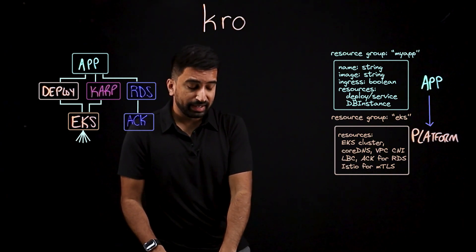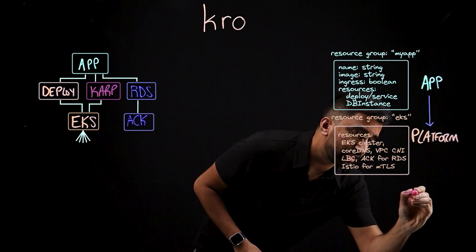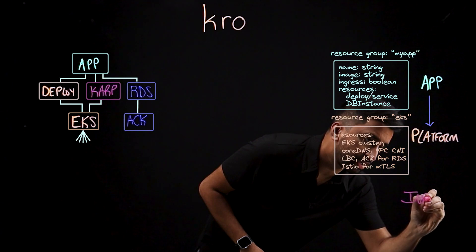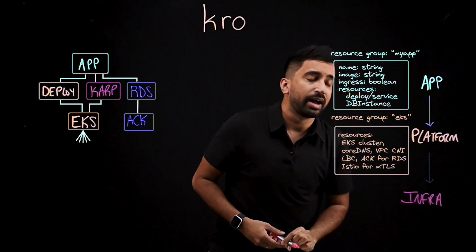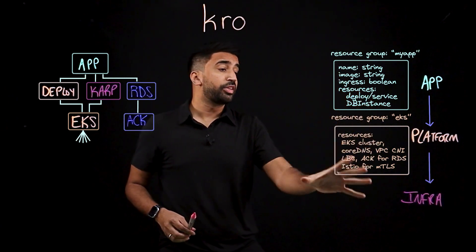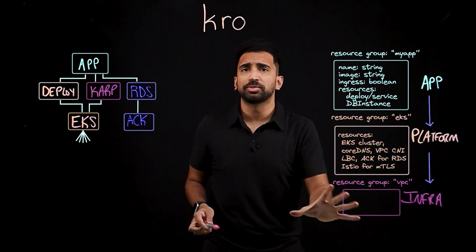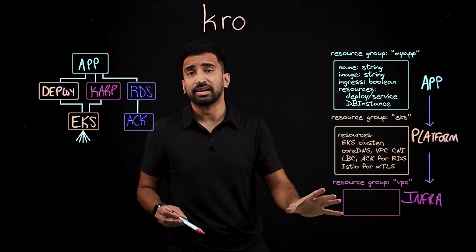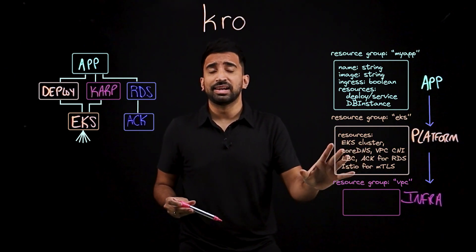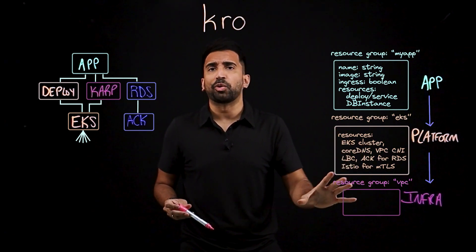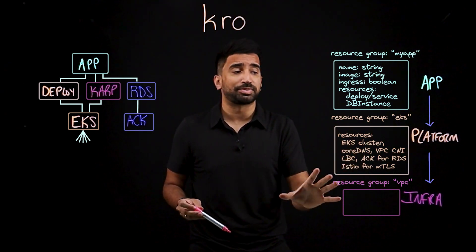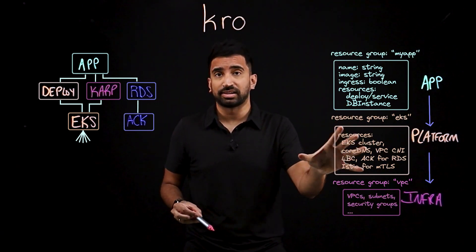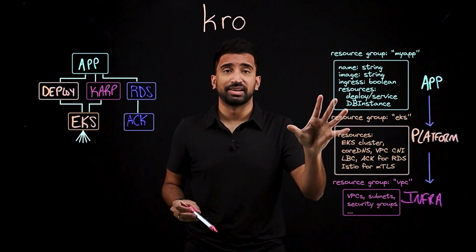Last piece here — let's call it the infrastructure layer. We're going to have another resource group here. Without going into too much detail, just know that we have things like the VPC, subnets, and other organizational best practices implemented here for what the EKS cluster itself needs.